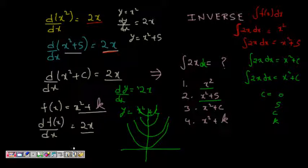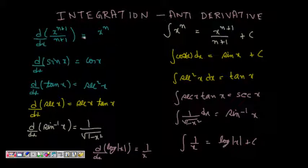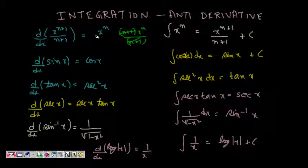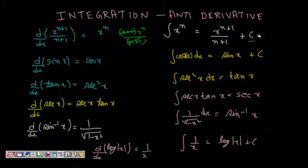Let's look at some differentiation results to derive integration formulas. If we differentiate x^(n+1) / (n+1), we get x^n, because the (n+1) factors cancel. So using the inverse relationship, if we integrate x^n we get x^(n+1) / (n+1) + c. We add the constant c because integration gives a family of curves.